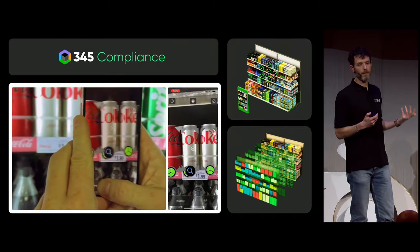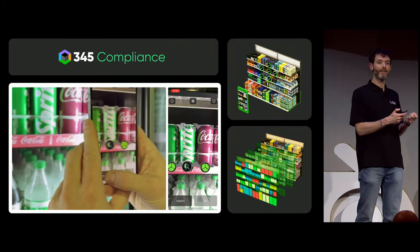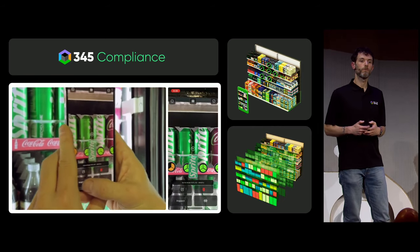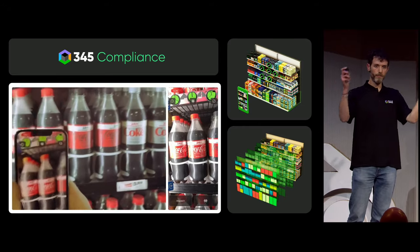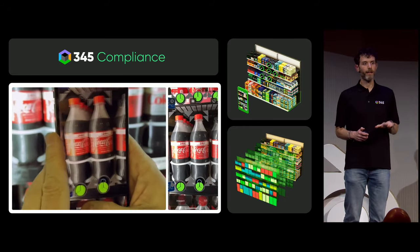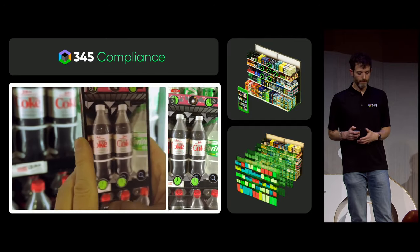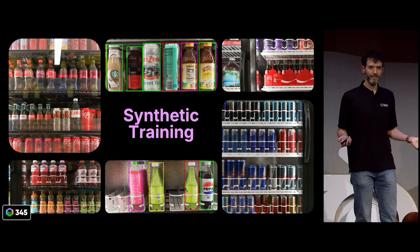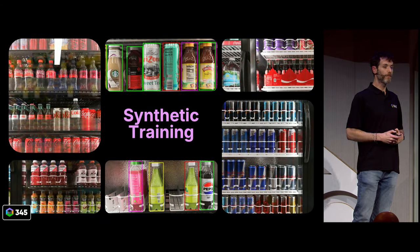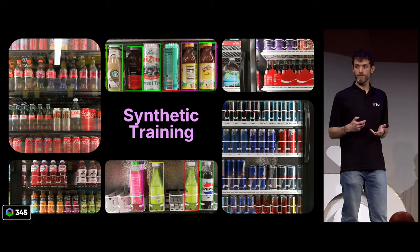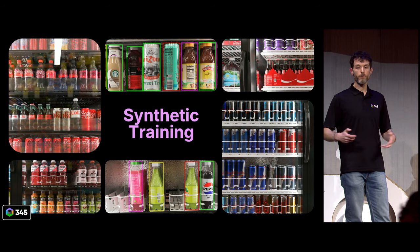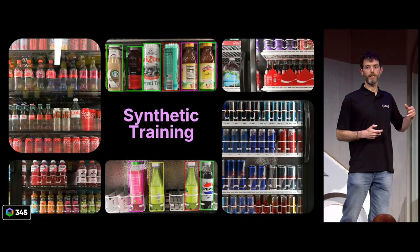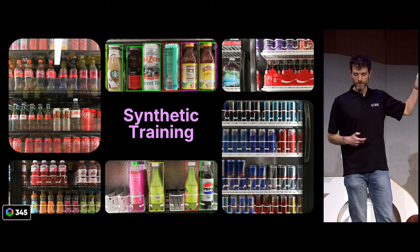One of those applications is compliance. A client might want to know what's actually going on in their store, so we have a machine learning system that works either on a mobile device, as you see here, or on an image of a full bay, and that system can recognize products. Machine learning needs lots of data, and we use synthetic training for our machine learning system. The training system is a procedural generation system that generates hundreds of random shelf layouts in Blender and renders them using Cycles.